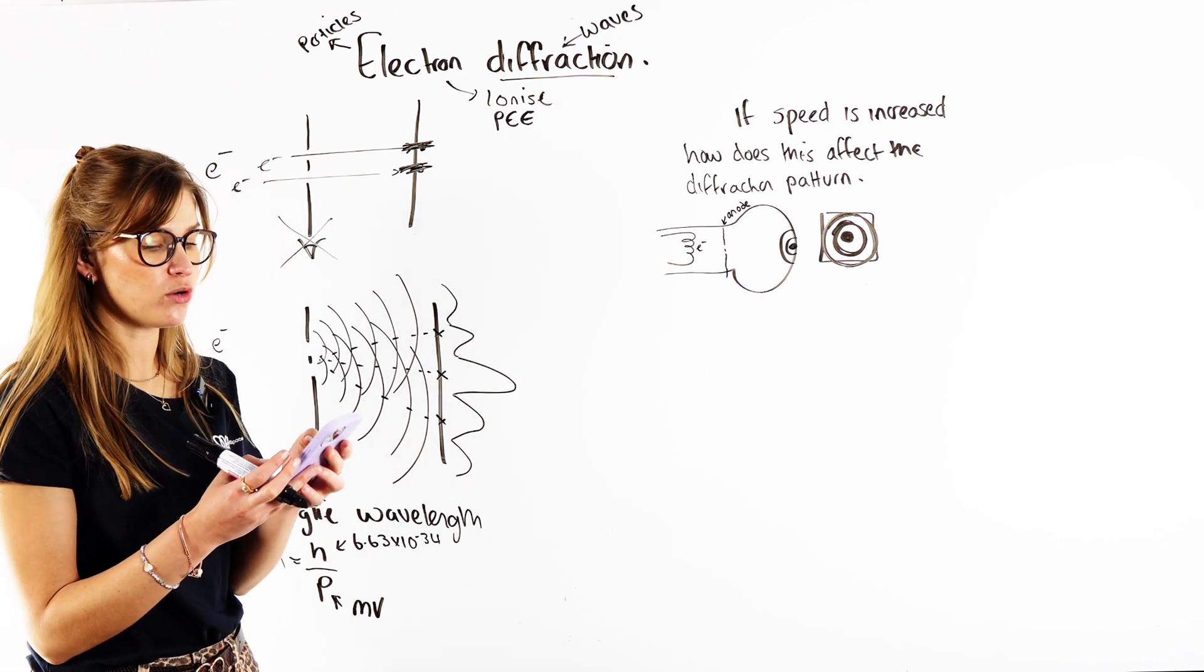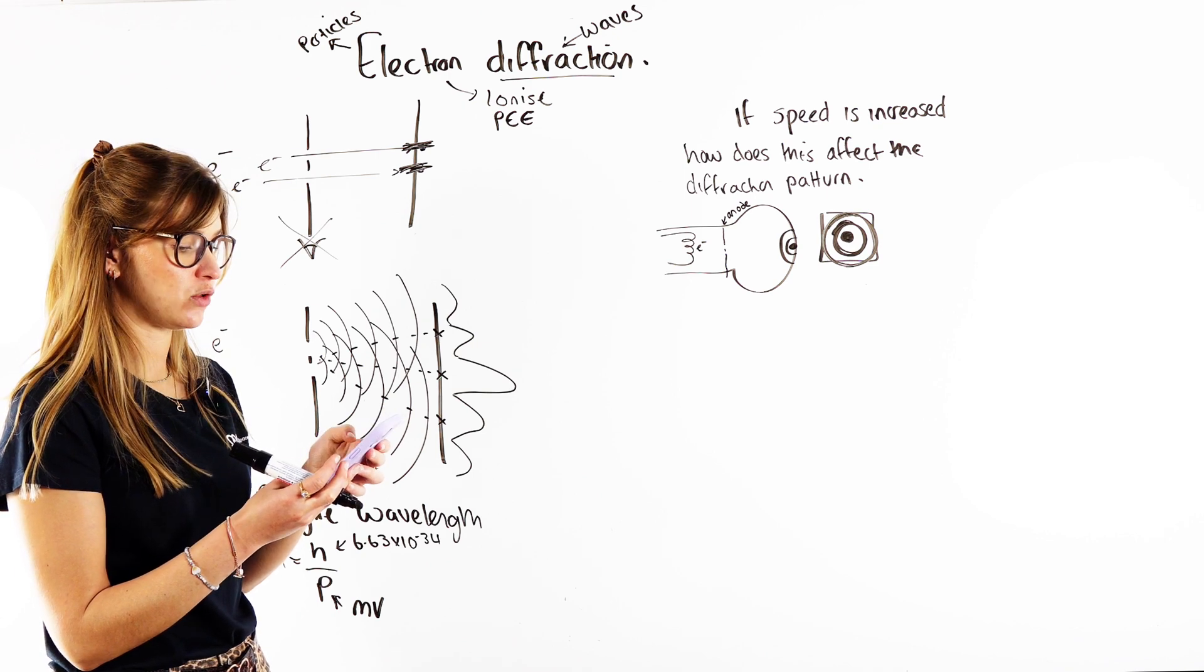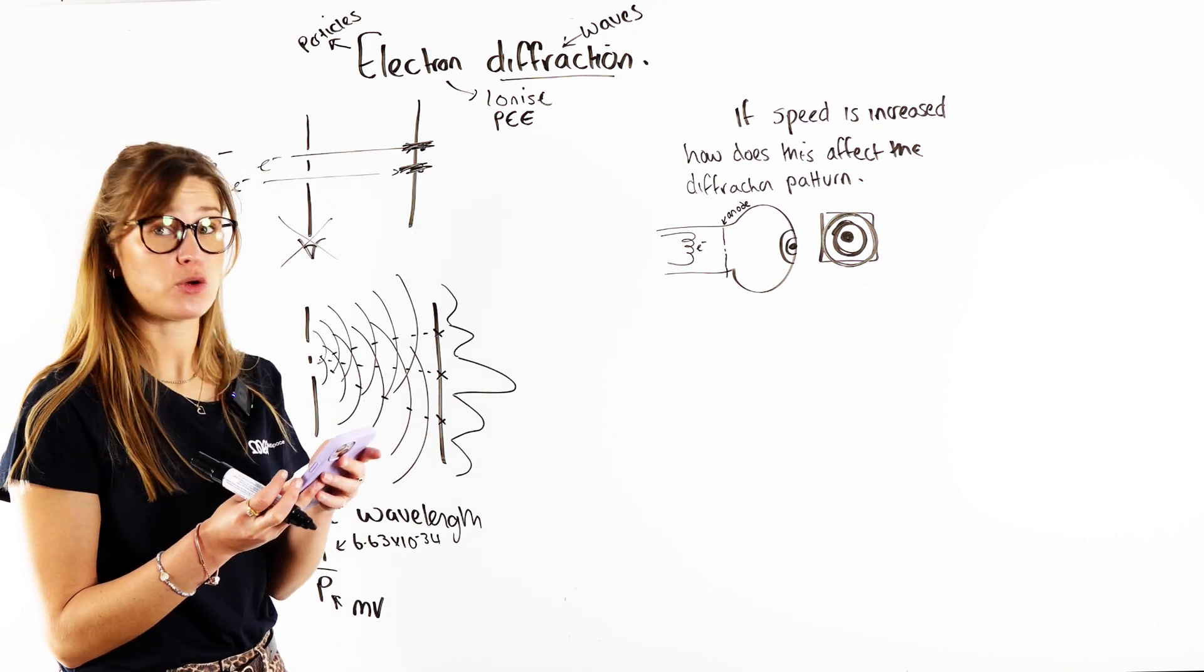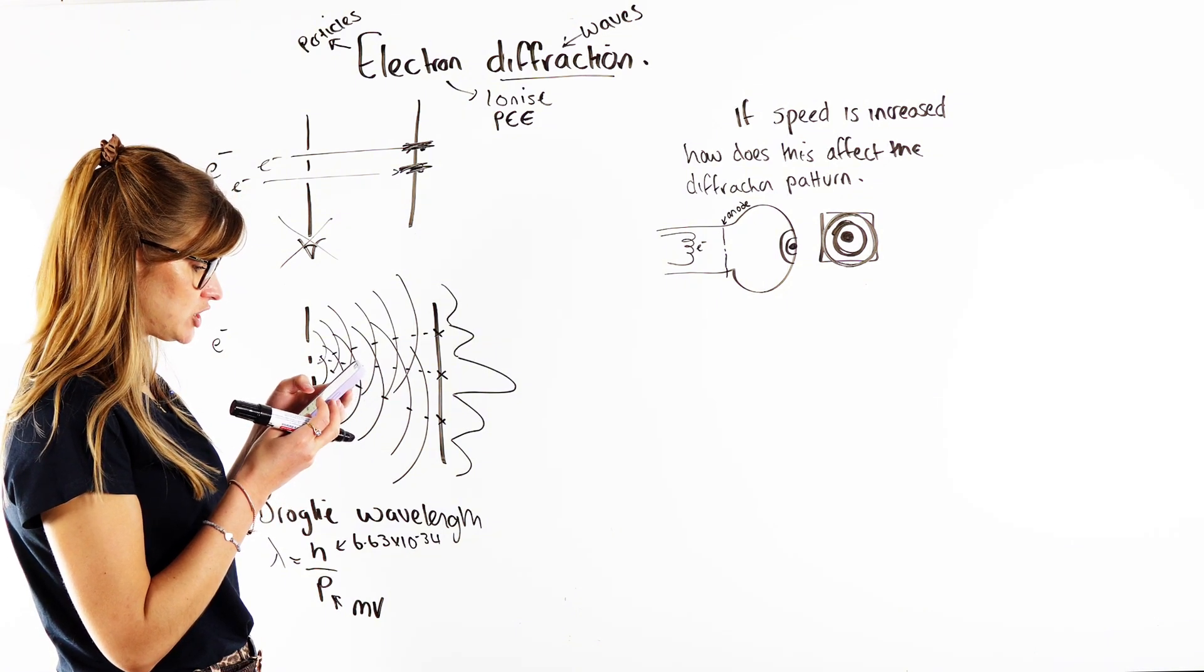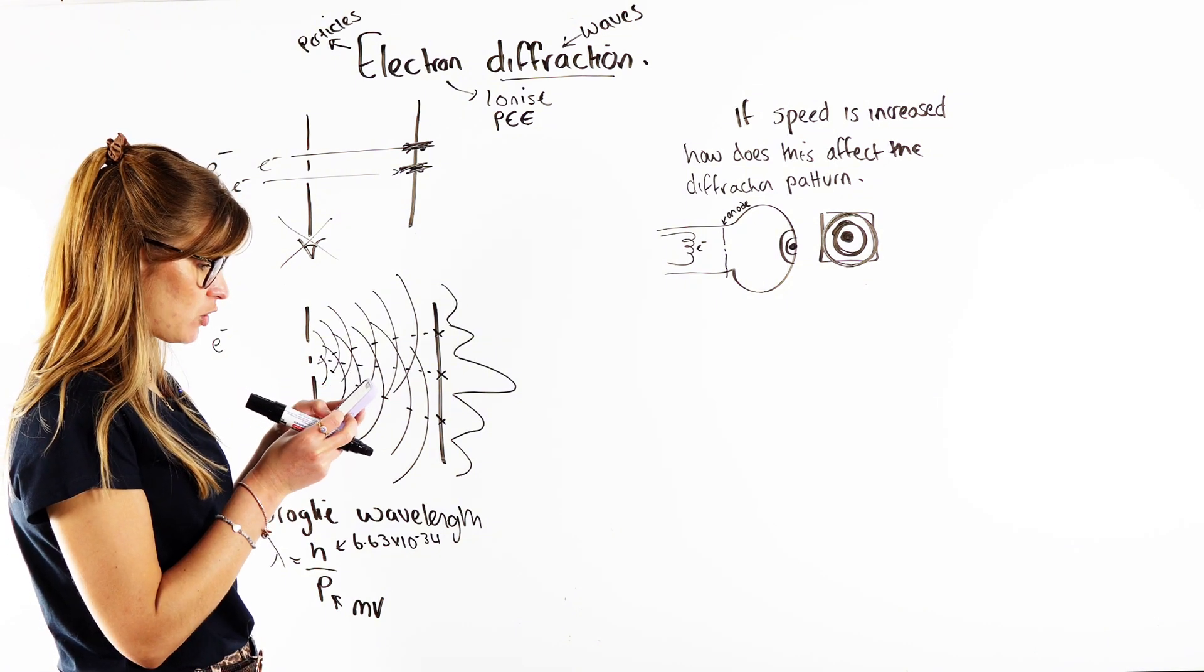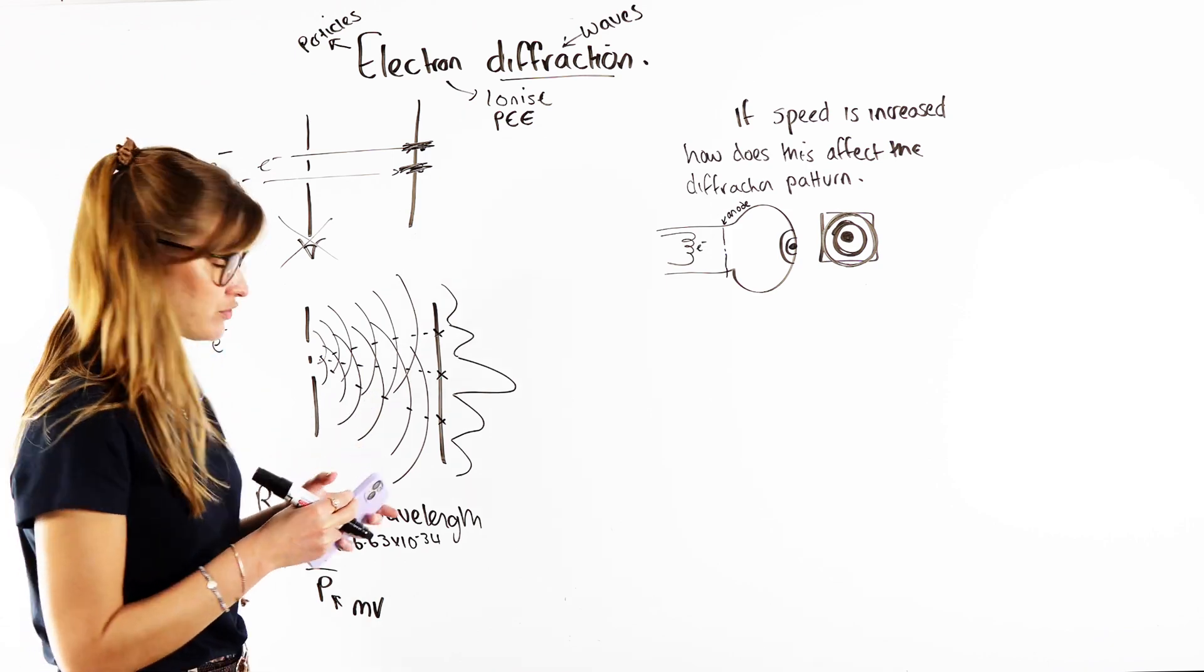So hopefully you have your formula sheets or your data sheets. I have mine on my phone all the time, and hopefully so do you. So if I just want to double-check what Planck's constant is, if I'm not blind, 6.63 times 10 to the negative 34.